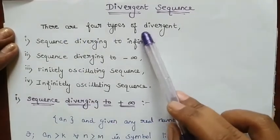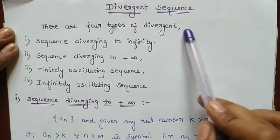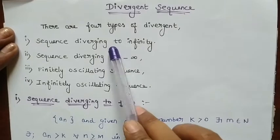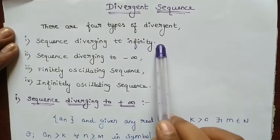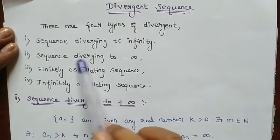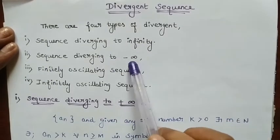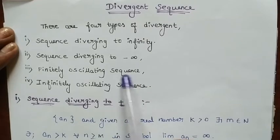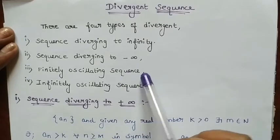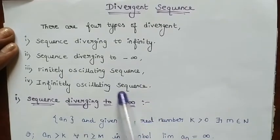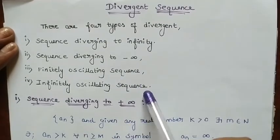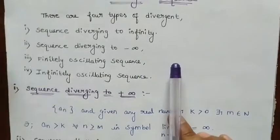There are 4 types of divergent sequences: sequence diverging to plus infinity, sequence diverging to minus infinity, finitely oscillating sequence, and infinitely oscillating sequence.